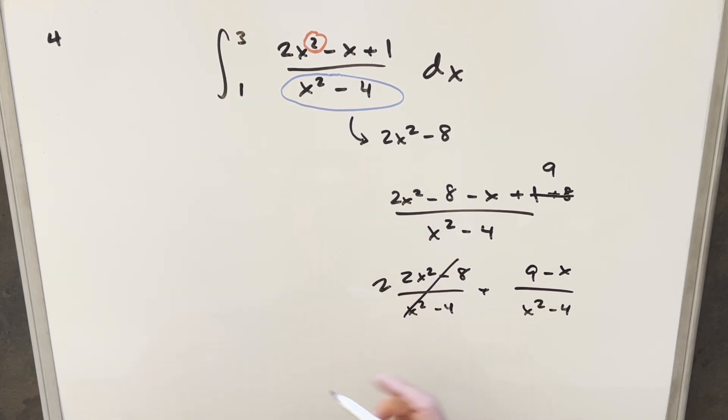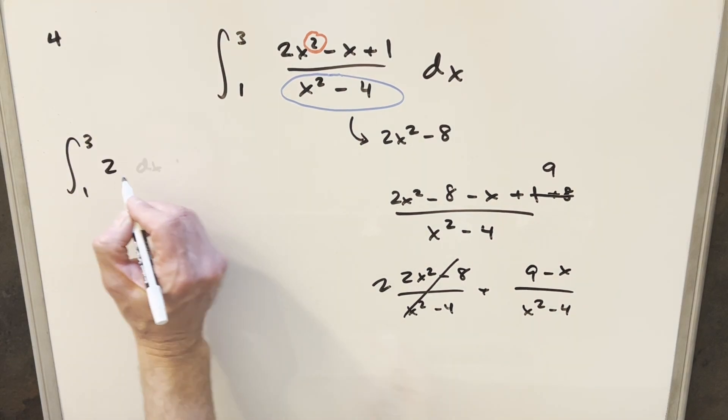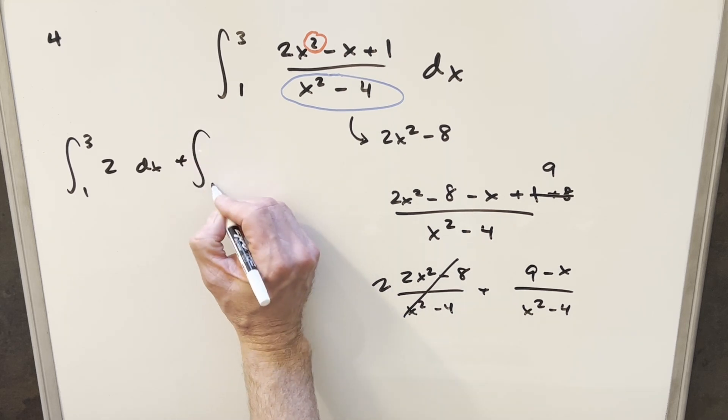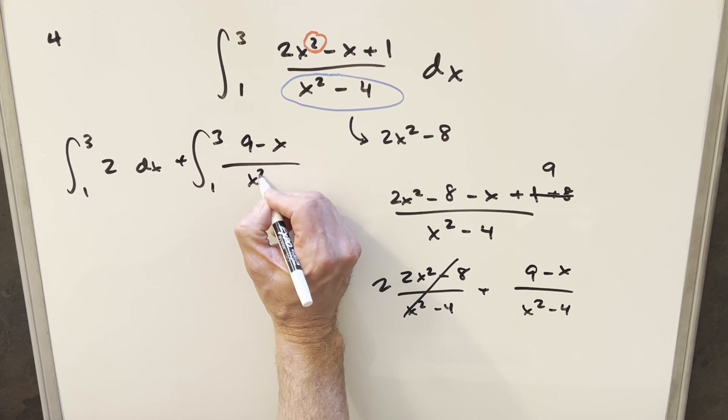But then what we can do now is we can take this and split this into two integrals. So the first one, we're just integrating this two. Then for the second one, we'll just integrate this thing. So we'll have from one to three, nine minus x over x squared minus four.